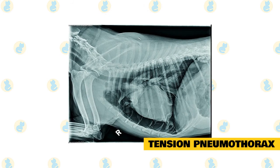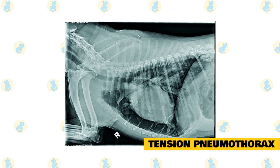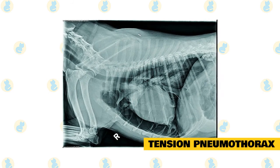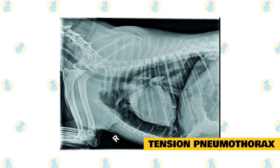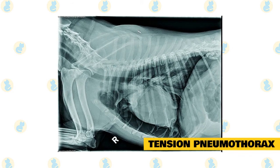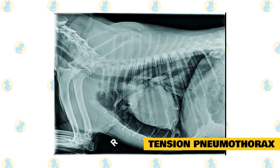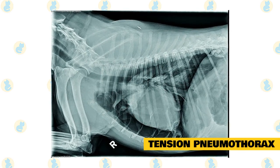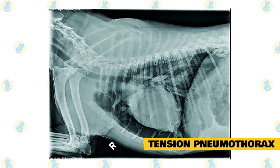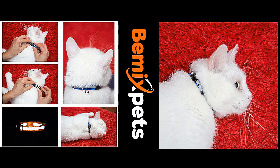Tension pneumothorax most often occurs when patients are intubated — such as during insertion of a breathing tube under general anesthesia — or with use of a ventilator. If the pressure of ventilation is too great, the lung can rupture. The resulting flap-like defect can act like a one-way valve, allowing air to accumulate outside the lung and within the chest cavity. It can also occur from blunt trauma, penetrating wounds, or during spontaneous negative pressure inspiration.